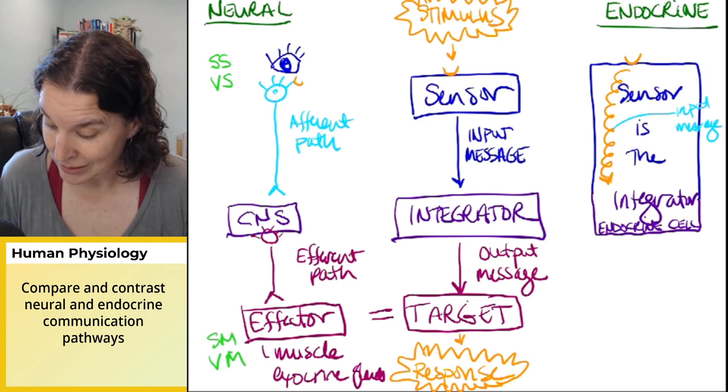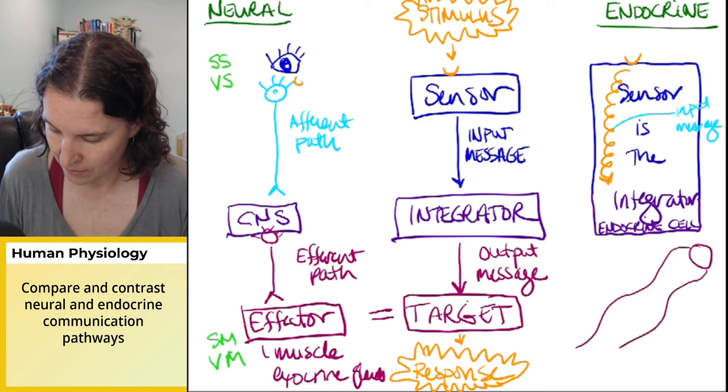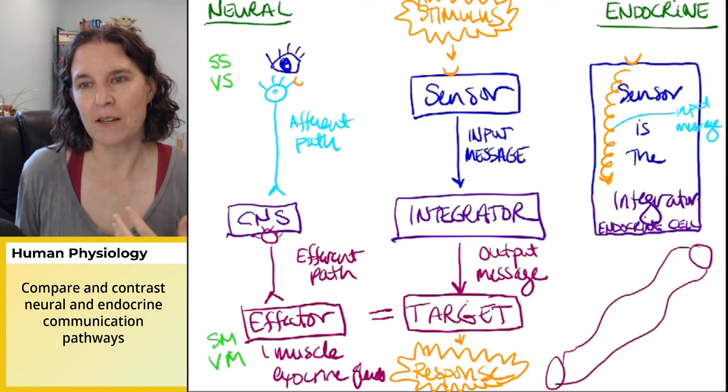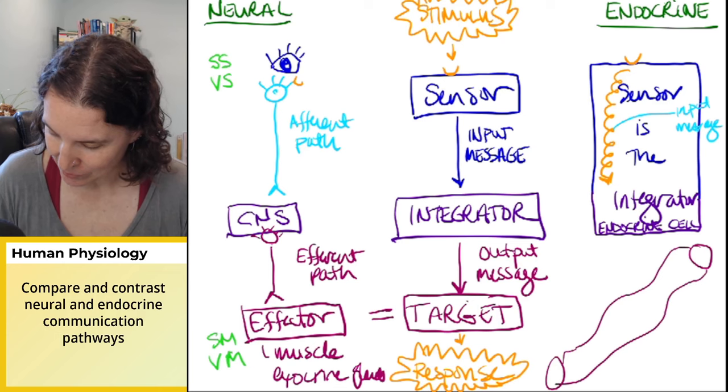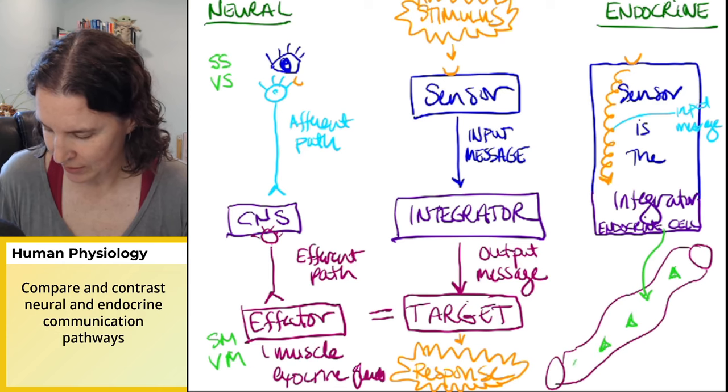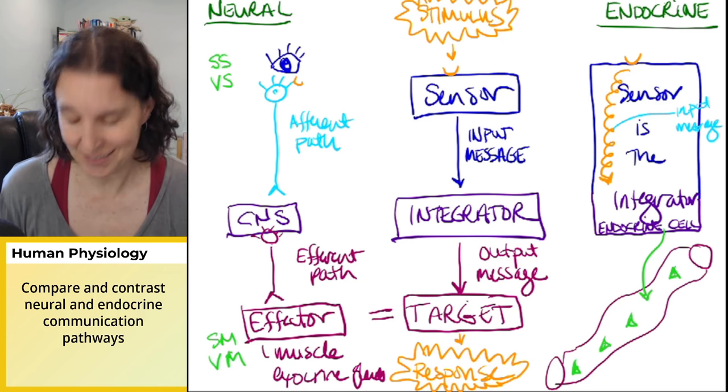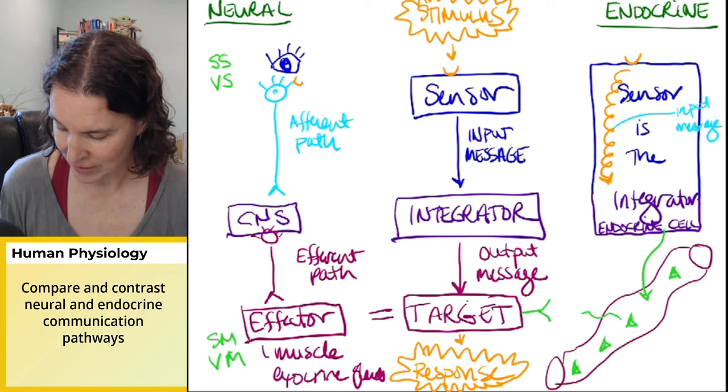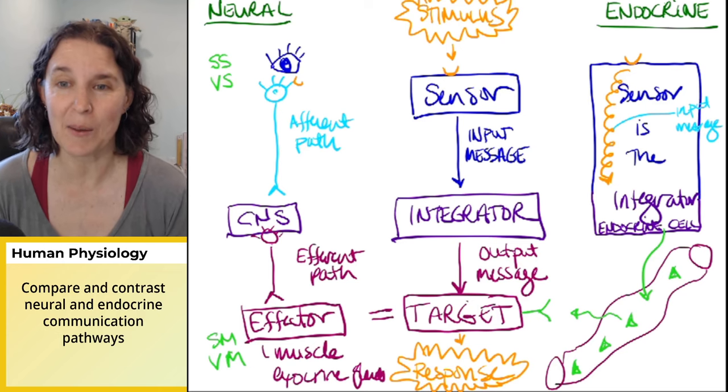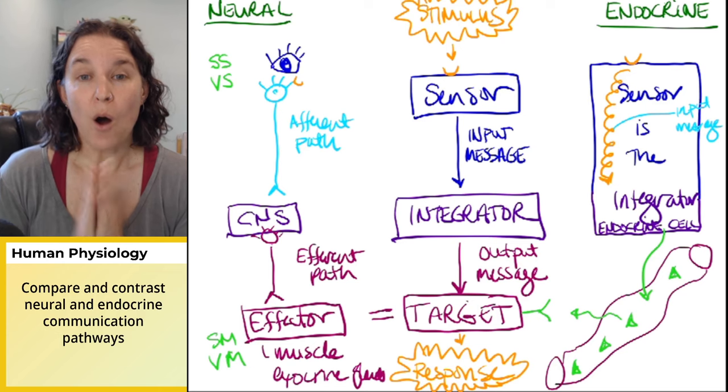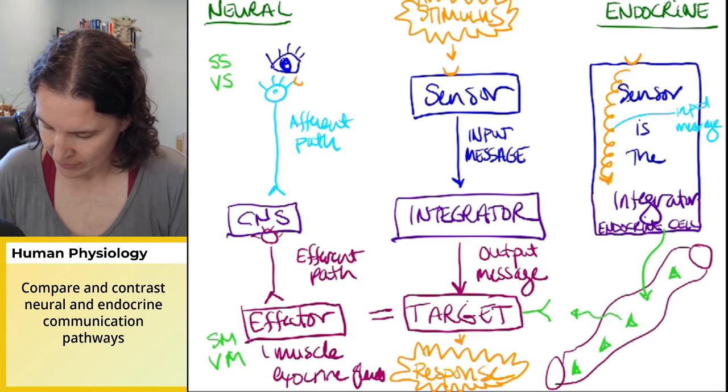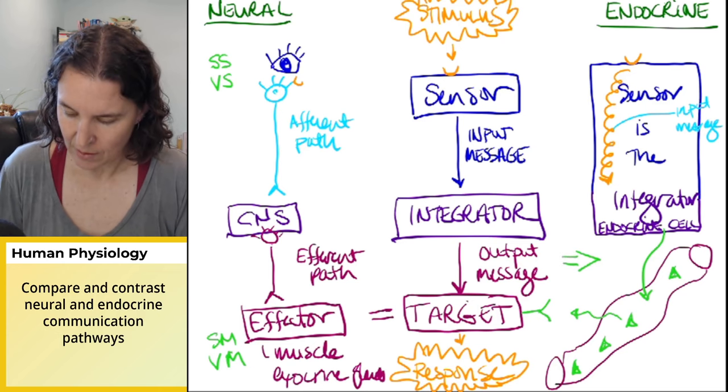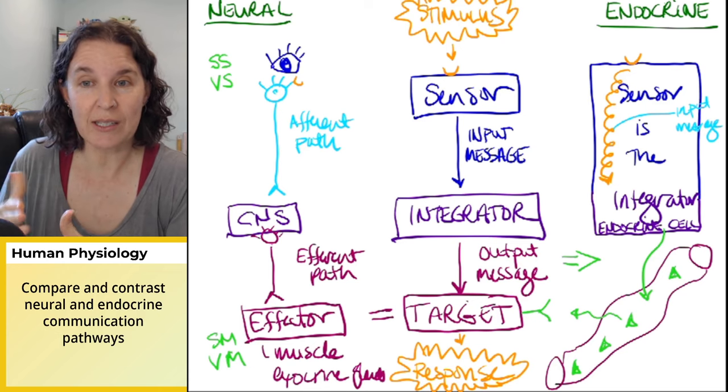Because then the endocrine structure also acts as the integrator and says, hmm, I see that we have received this information. It's been processed inside of me, and now I know what I want to do. It's an endocrine structure, so what is it going to do? It's going to do one thing and one thing only. We're dumping some chemical. We're going to dump hormones into the blood. And then our target just so happens to have the receptor that can pick that up. The hormone is the output message.